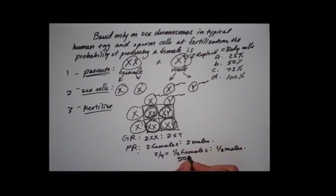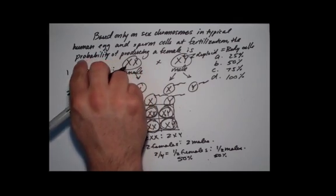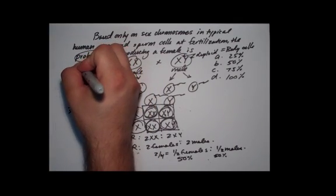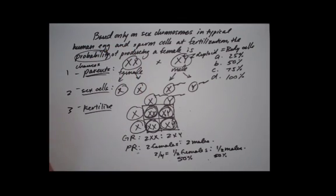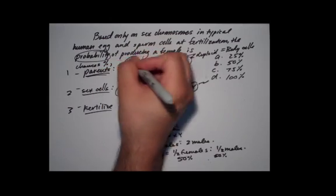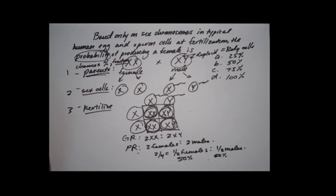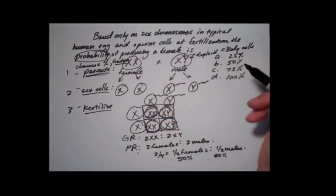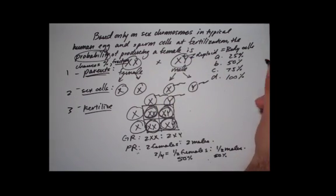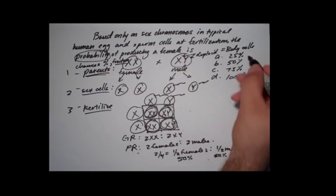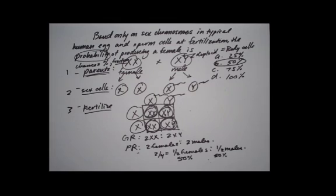You can express it as percentages: 50% females, 50% males. So the probability — that means the chances — and usually you do it by percent or fraction. Whenever they ask for probability, they're looking for the chances of having some kind of offspring or characteristic. They want to know the probability of a female. Well, we just figured that out — it's 50%. Easy problem right there, and that one's in your packet somewhere.